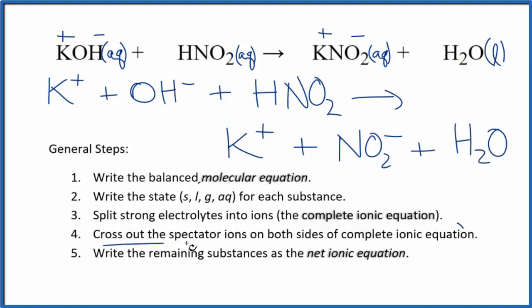Now we can cross out spectator ions. They're on both sides. So I'm looking for something that's the same in the reactants and the products. The only thing I see is this potassium ion, so I can cross that out.